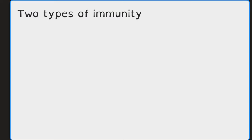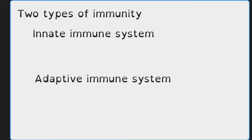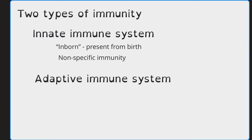Let's take a quick look at the two types of immunity found within the body. Immunity can be divided into two different types: the innate immune system and the adaptive immune system. The innate immune system is the inborn immune system, present from birth and requiring no programming. This immune system has no specific recognition of pathogens, so the immunity here is nonspecific. The first line of defense includes things such as your skin and mucous membranes, and also cells such as natural killer cells or phagocytes.